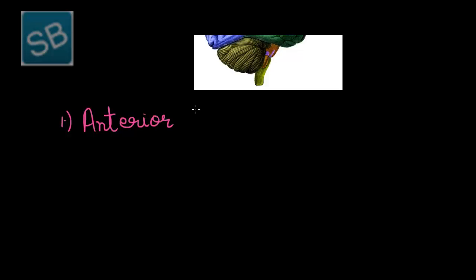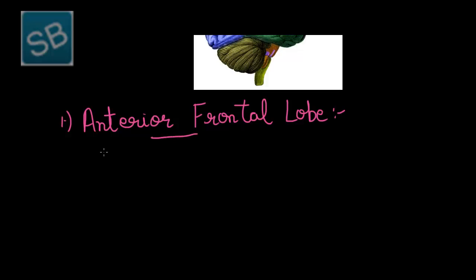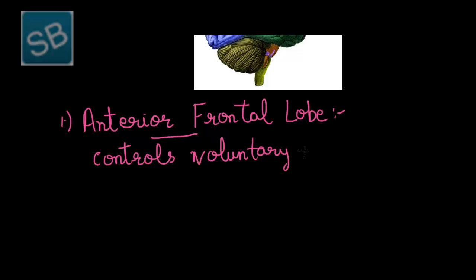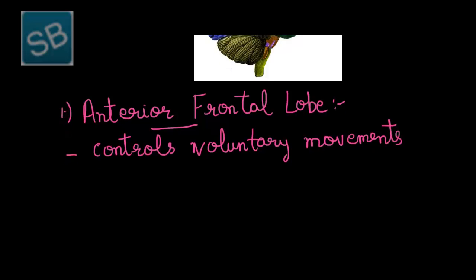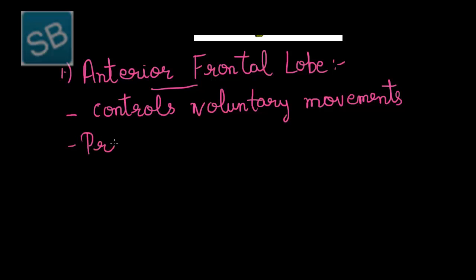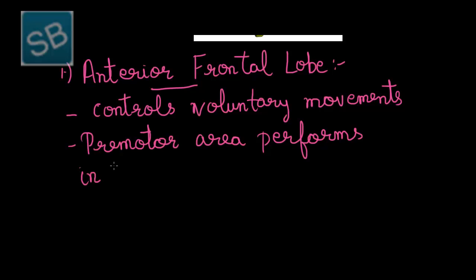The anterior frontal lobe mainly controls voluntary movement, that is, voluntary action. Within this frontal lobe, there are areas which perform other functions. The premotor area of the frontal lobe performs involuntary and autonomic nervous system actions.